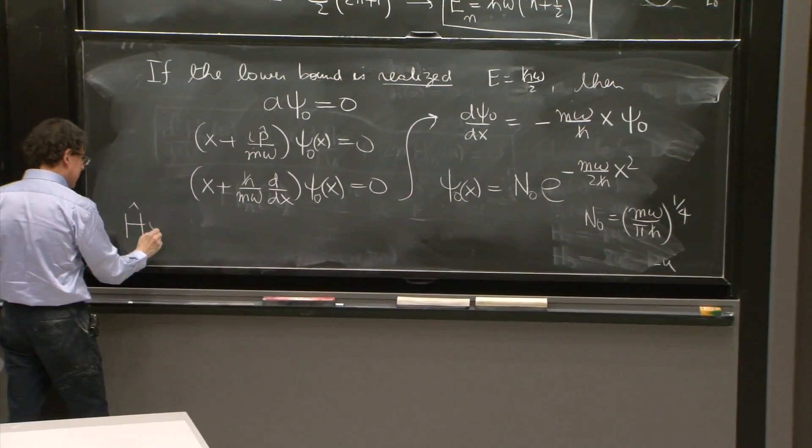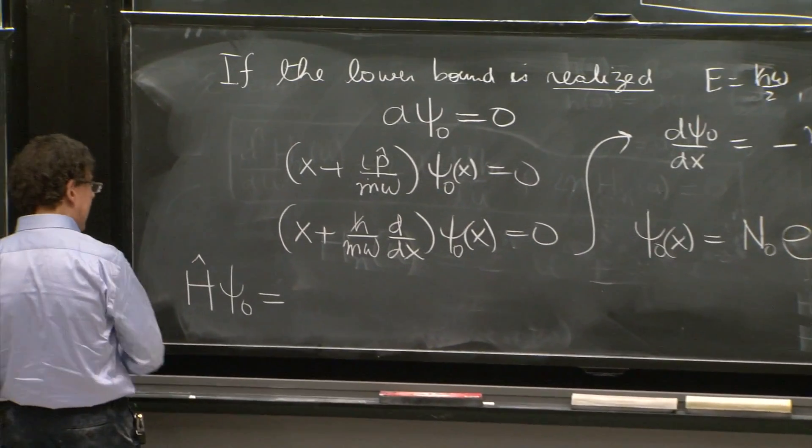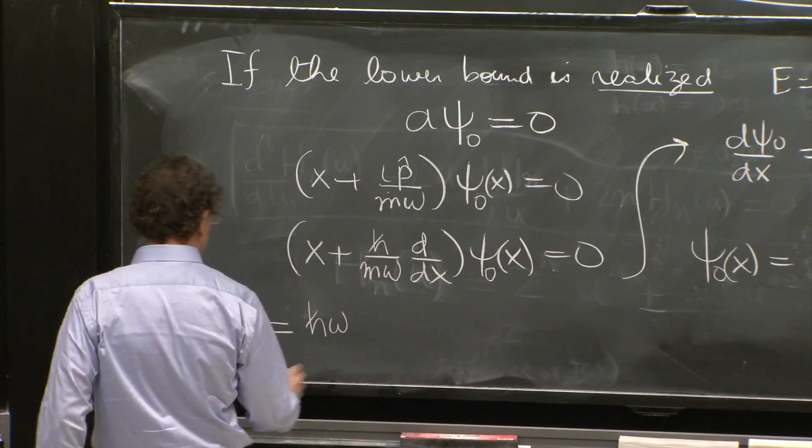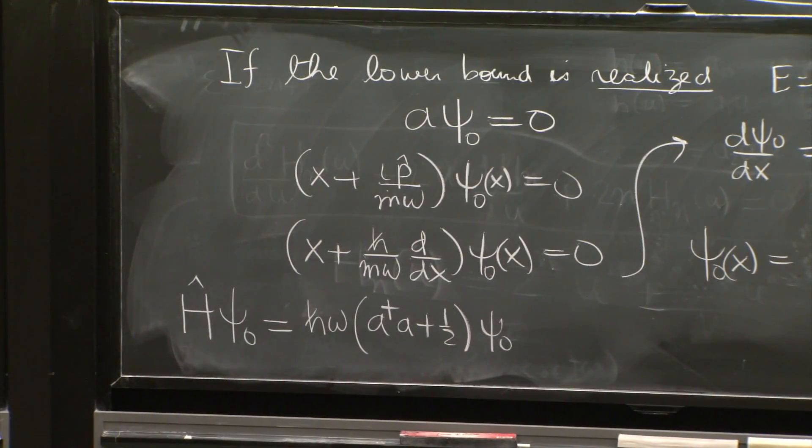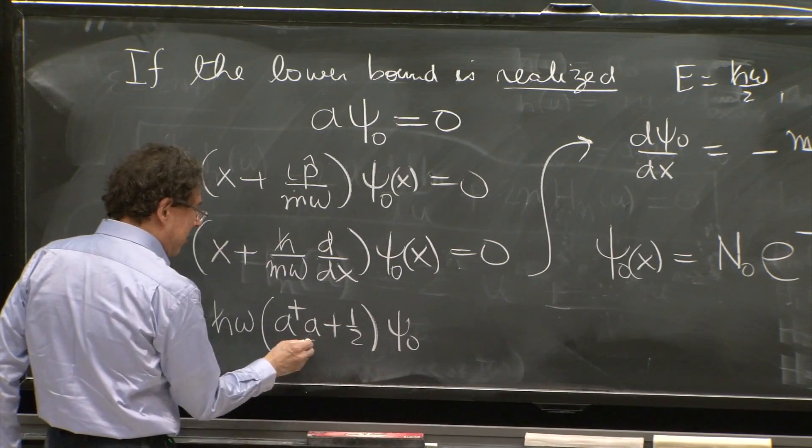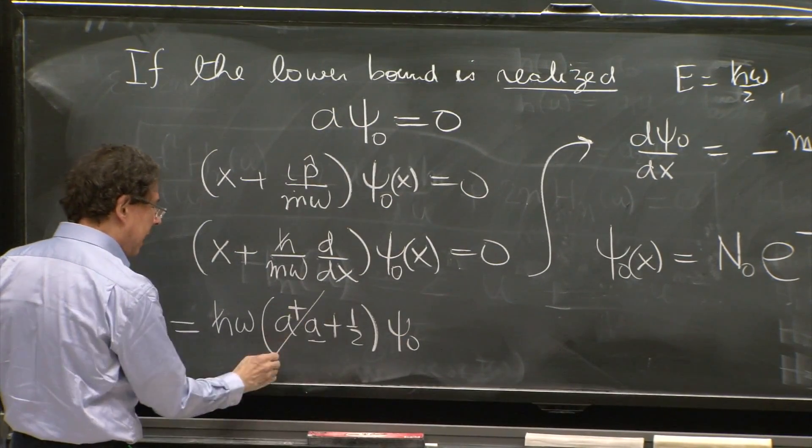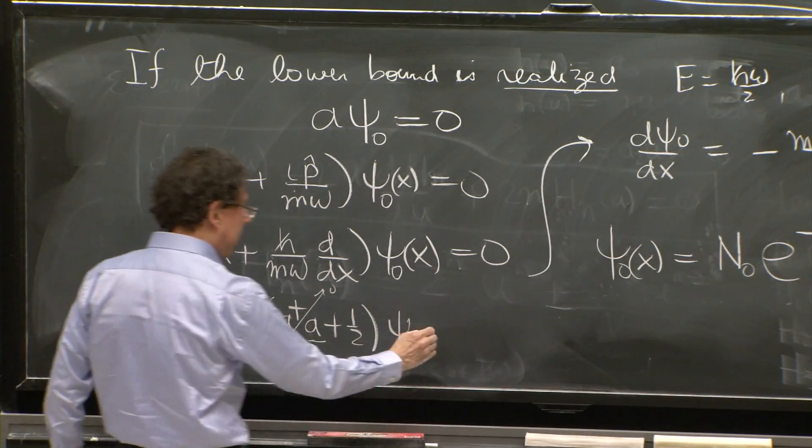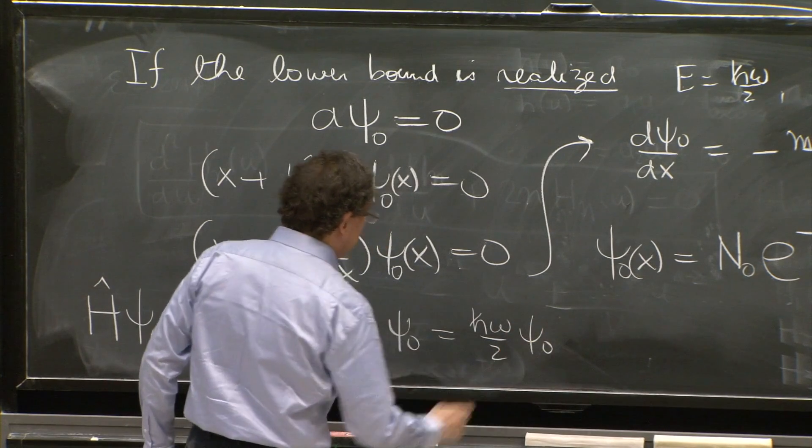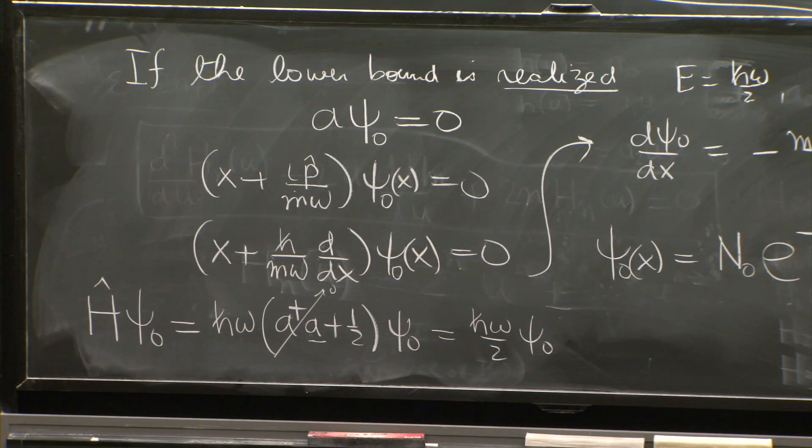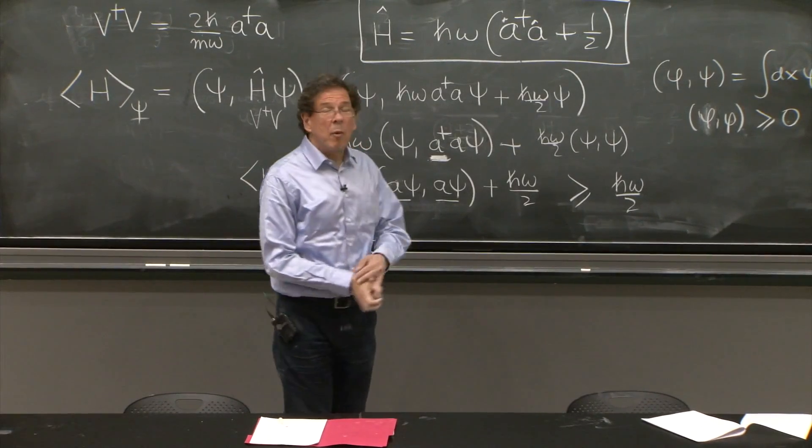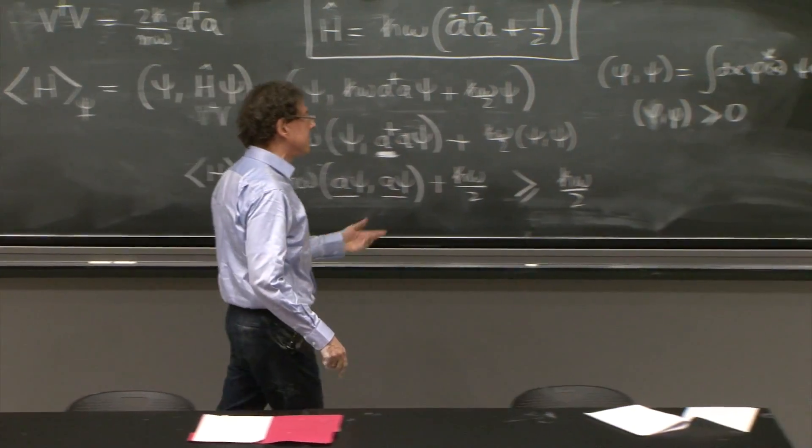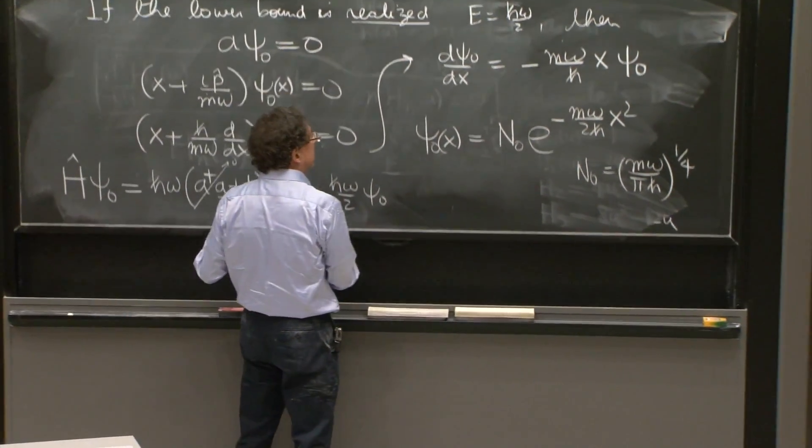You could see what the energy is by doing this very simple calculation. Look, get accustomed to these things. H of psi 0. What is H? It's h omega a dagger a plus 1/2 acting on psi 0. The a acting on psi 0 already kills it, because that's the defining equation. So that's 0. And you get 1/2 h bar omega, confirming that you did get this thing to be correct. So this is only the beginning of the story. We found the ground state, and now we have to find excited states. Let me say a couple of words to set up the discussion for next time.